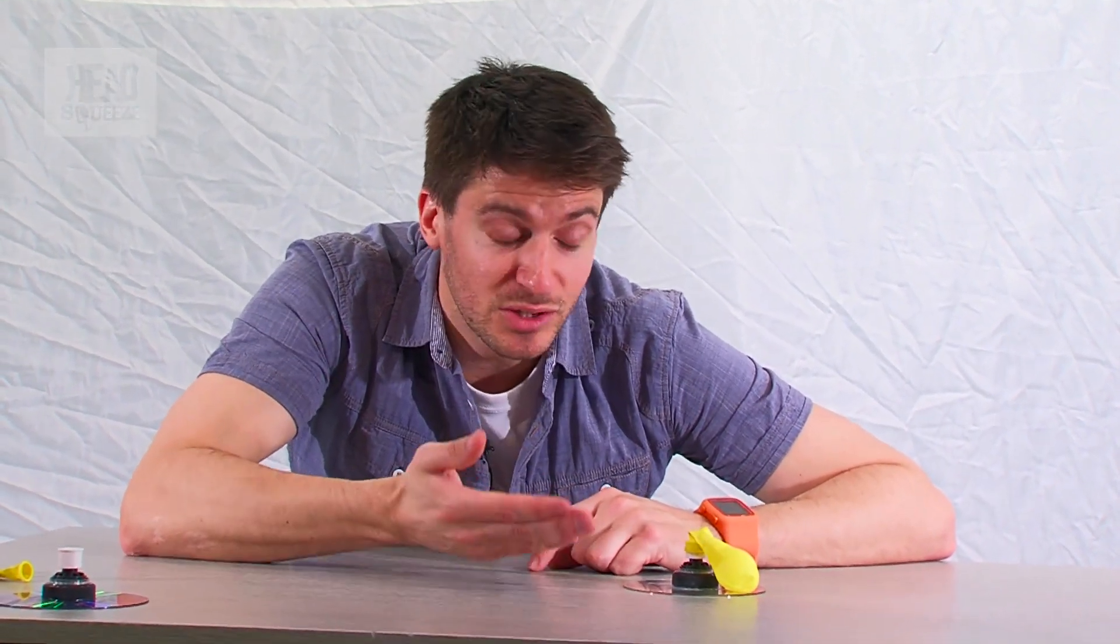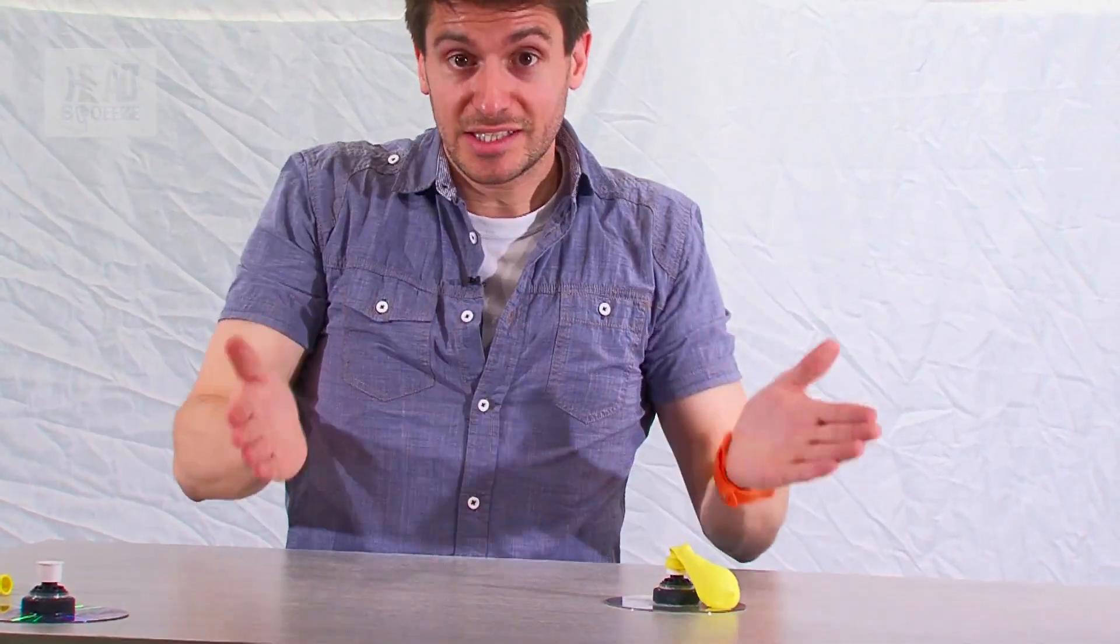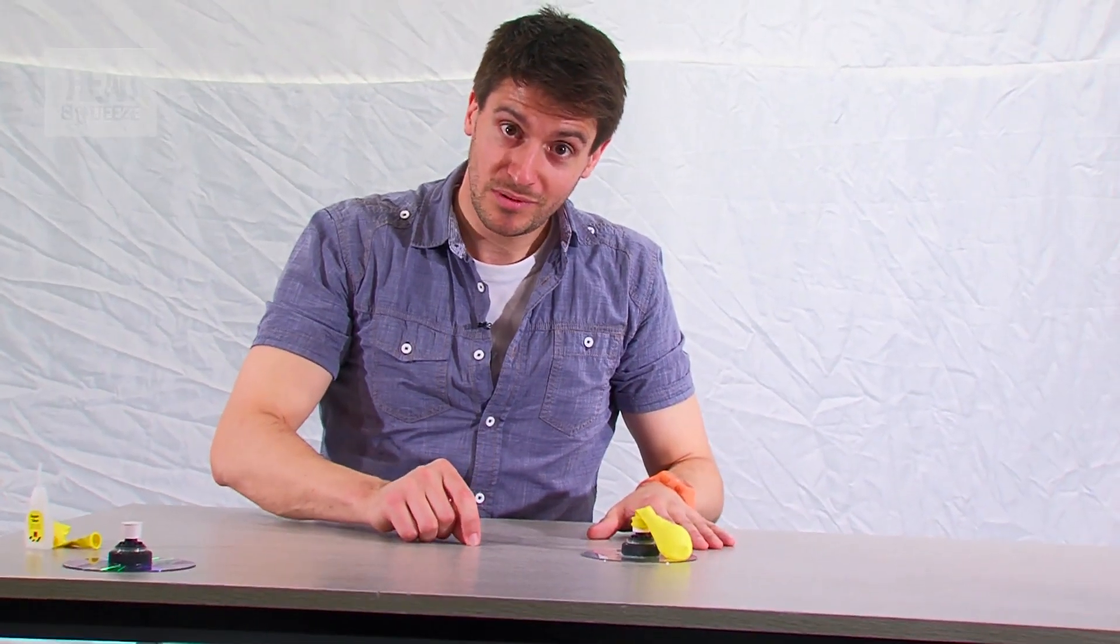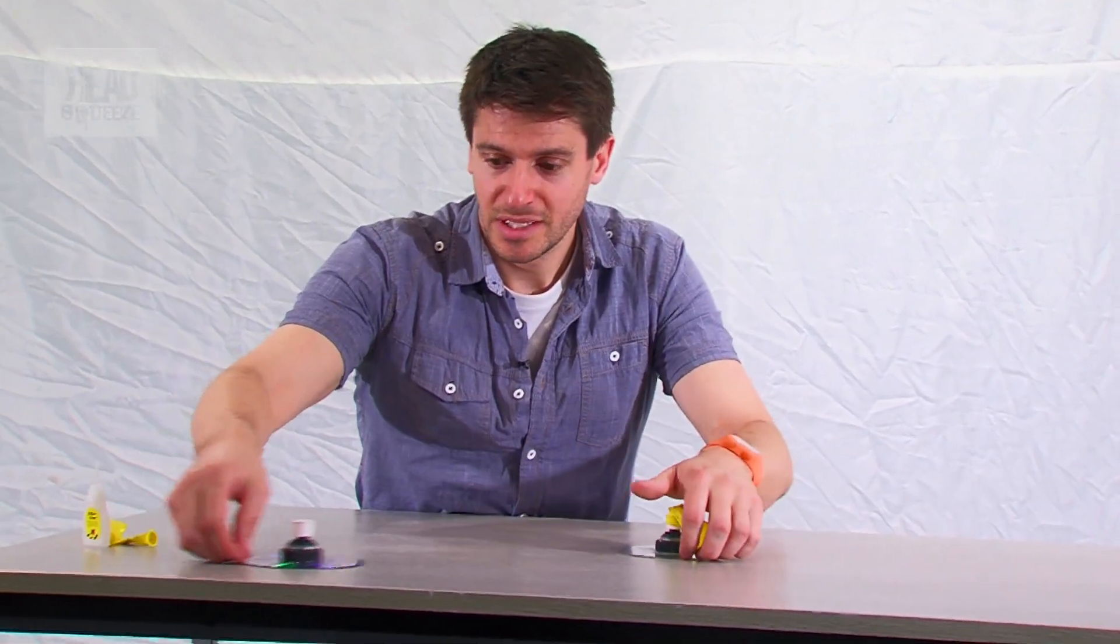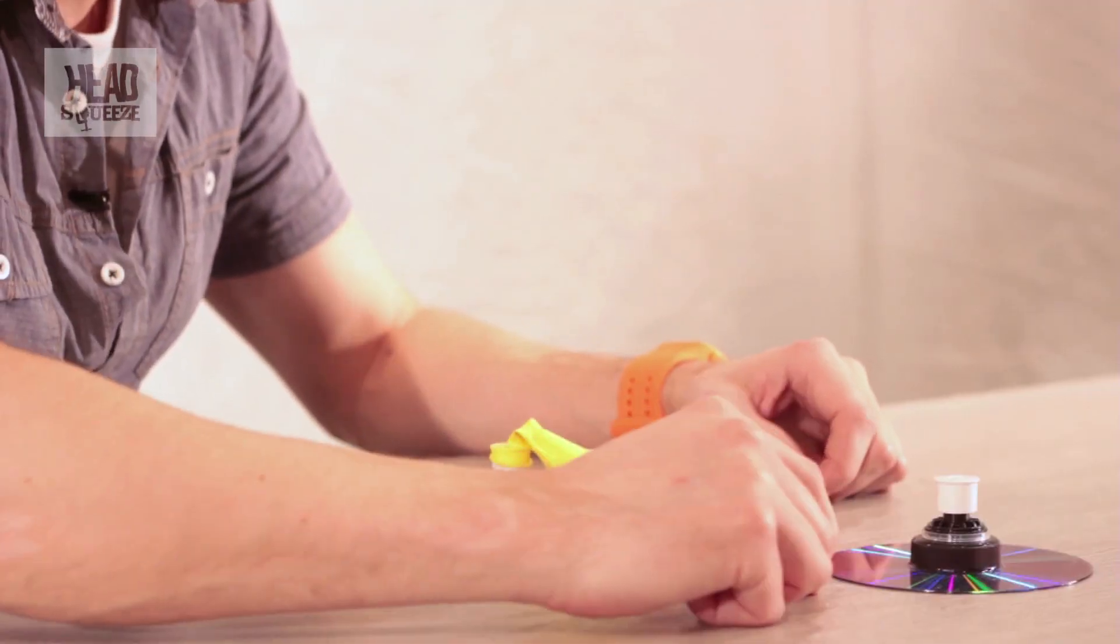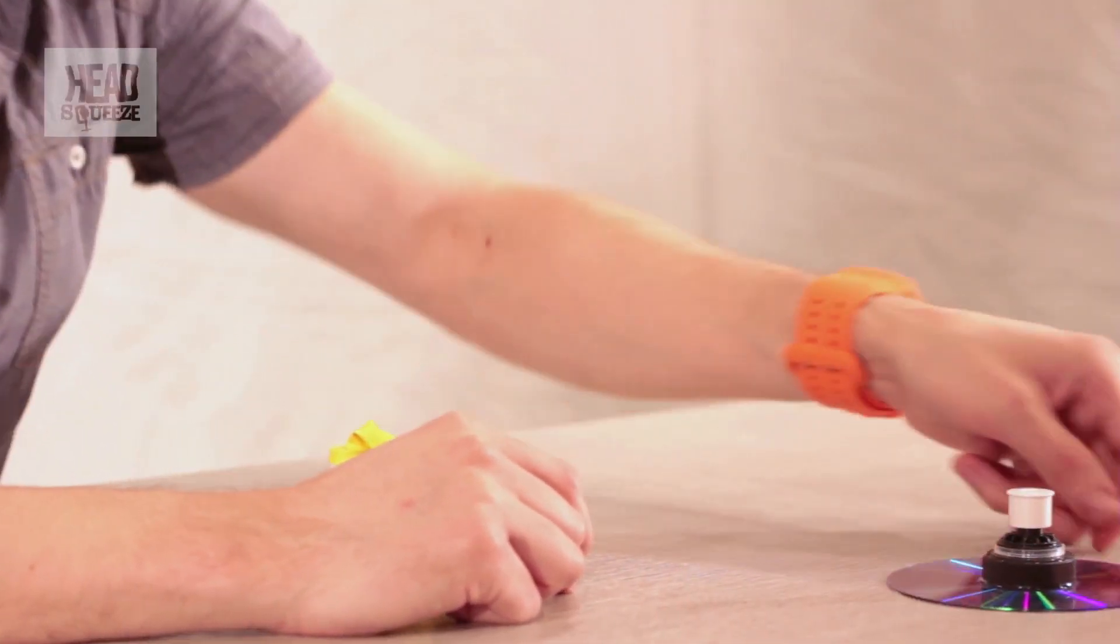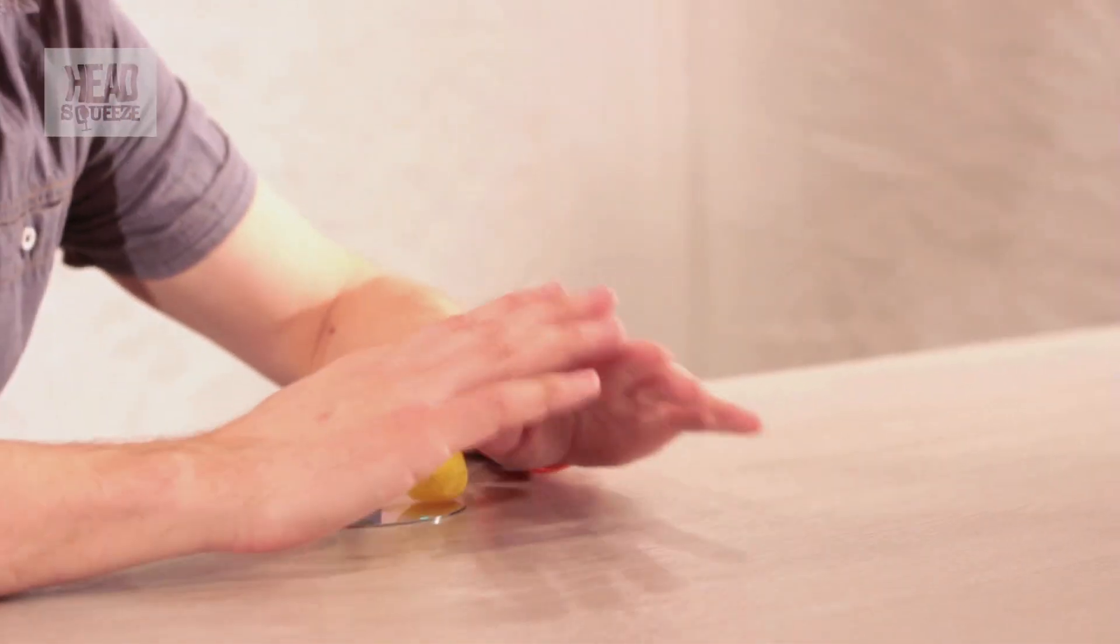And by doing that you're completely separating the surface of the table and the surface of the CD, and so that friction that was there earlier with our other model with no balloon on it, that friction is now completely gone.